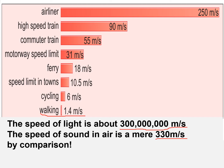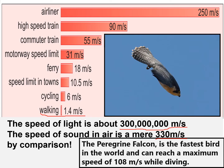The speed of sound is about 330 meters per second. There's an extension question: can you explain why in the Antarctic the speed of sound would be a little bit slower than that? Let's also celebrate one of nature's wonders — the peregrine falcon, one of the fastest birds in the world, reaching a maximum of 180 meters per second when diving. You can clearly see the streamlined nature of its body as it goes into that dive position.